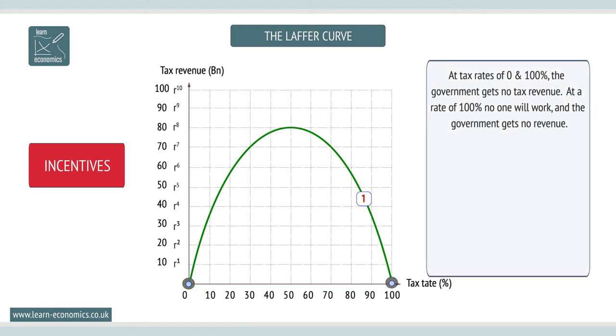Between 0 and 100%, the government gains more and then less revenue. So why is this?